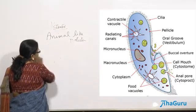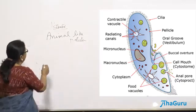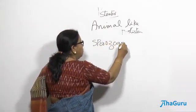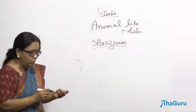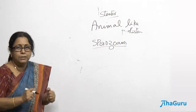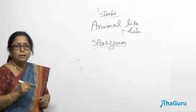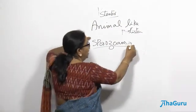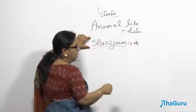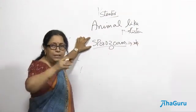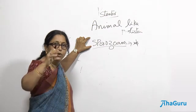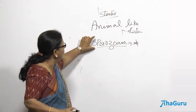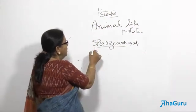There is one more animal-like protist group known as sporozoans. What are sporozoans? The causative organism for malaria belongs to sporozoans. Interestingly, sporozoans have no organs for locomotion — they are non-motile. Unlike ciliates, flagellates, and amoeboids which all have a locomotory structure, sporozoans have none. All sporozoans are parasites — there is no free-living sporozoan.